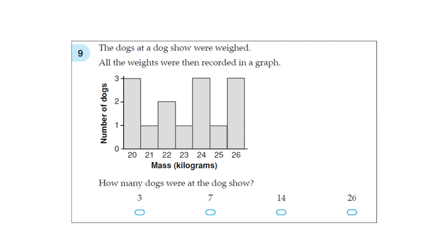3 dogs weighed 20 kilos, 1 dog weighed 21 kilos, 2 dogs weighed 22, 1 dog weighed 23 kilos, 3 dogs weighed 24, 1 weighed 25, and 3 weighed 26. Then we add up all the numbers that we just wrote down: 3 plus 1 plus 2 plus 1 plus 3 plus 1 plus 3. Let's do it together. 3 plus 1 is 4, plus 2 is 6, plus 1 is 7, plus 3 is 10, plus 1 is 11, plus 3 is 14. So 14 dogs at the dog show.